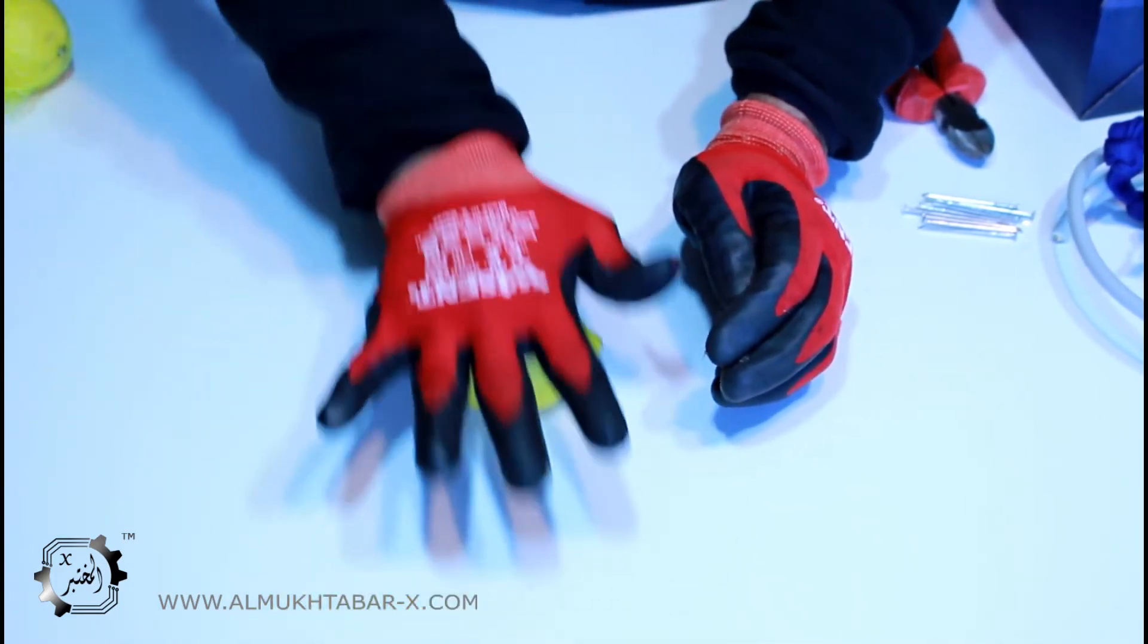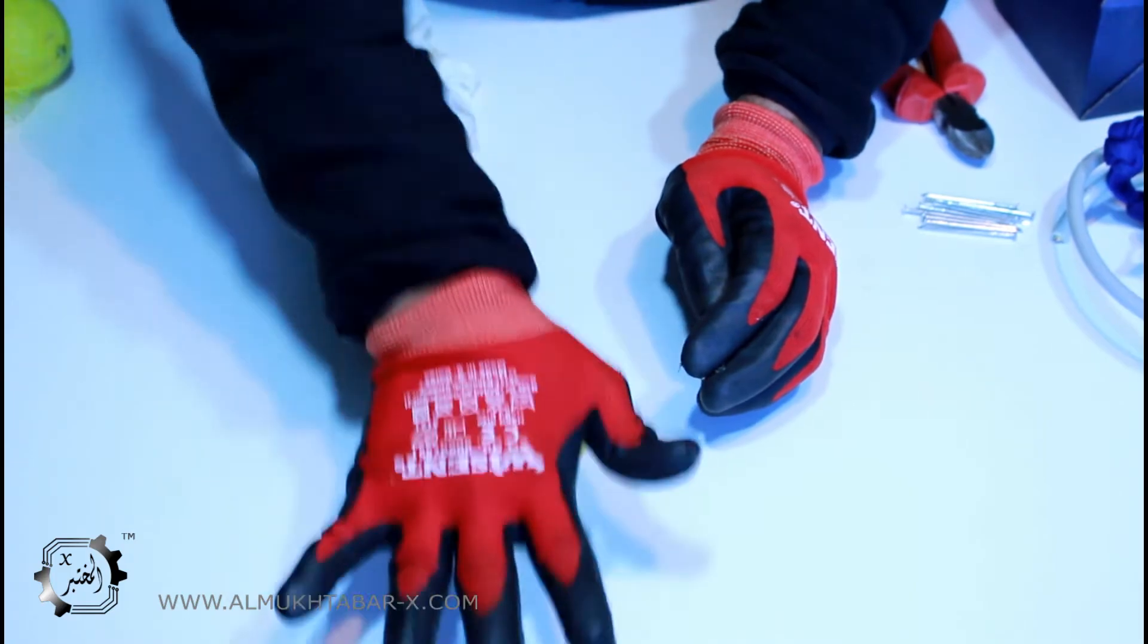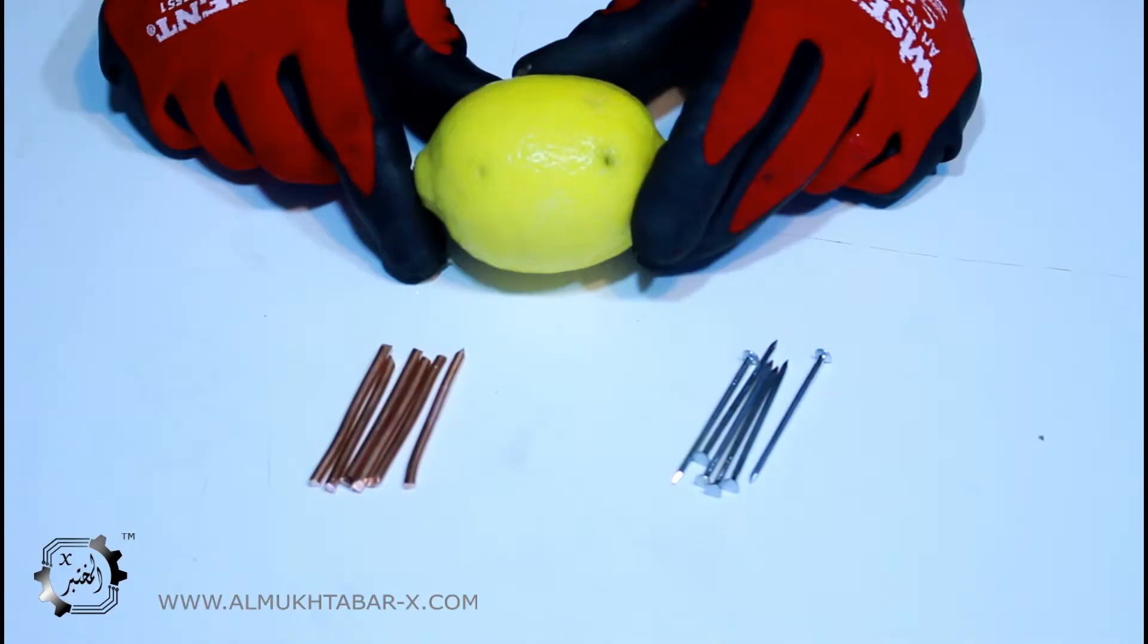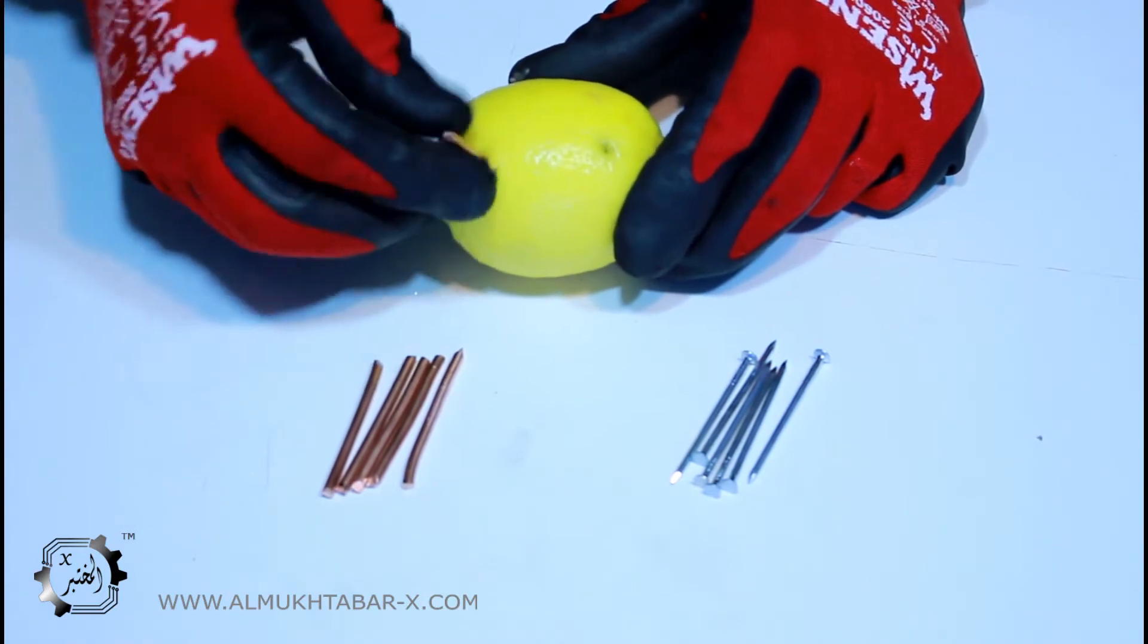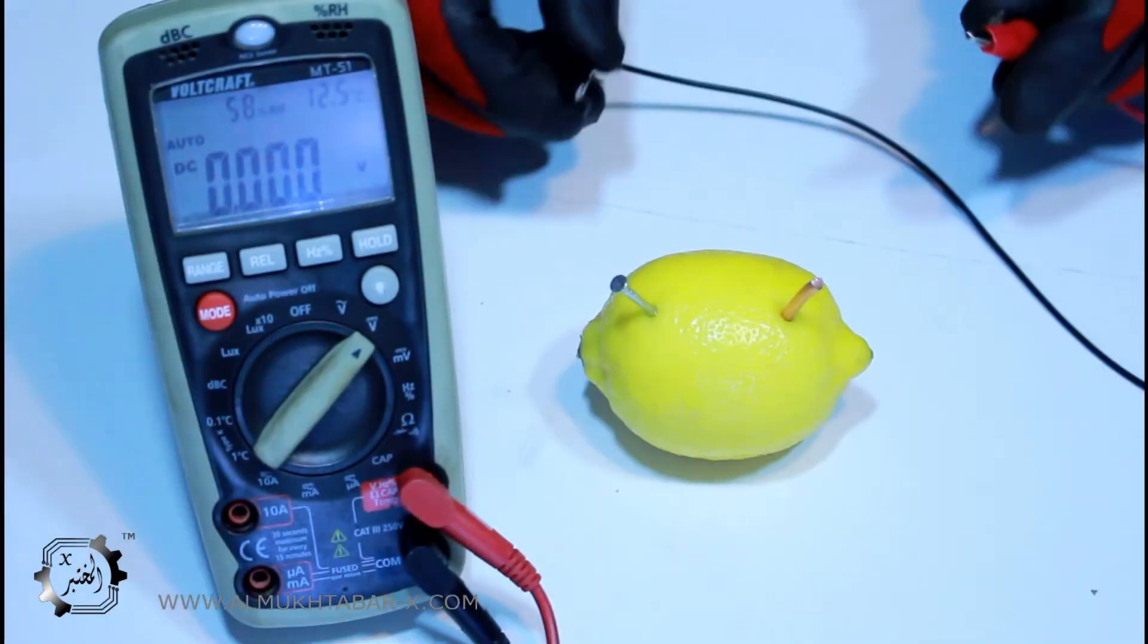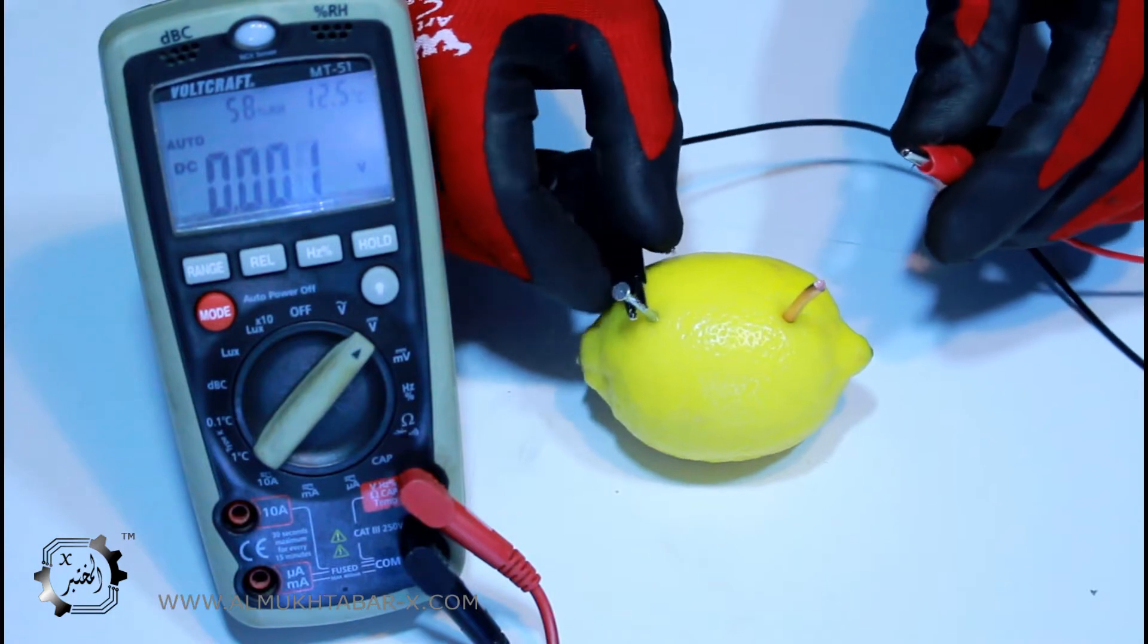So insert a copper wire and a nail into the lemon with a 3 centimeter gap between them. There you go, you just created a battery. The copper wire will act as the positive pole, the nail as the negative pole. So let's measure how much voltage and current it will provide.